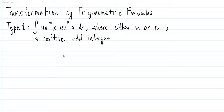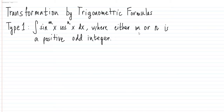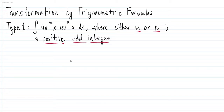There are actually four types of this problem, and in this video we will discuss Type 1. So there will be four videos under this topic. For Type 1, we have the integral of sin raised to m times x, cosine raised to n times x, differential x — where either m or n is a positive odd integer. Both of them could also be positive odd integers.